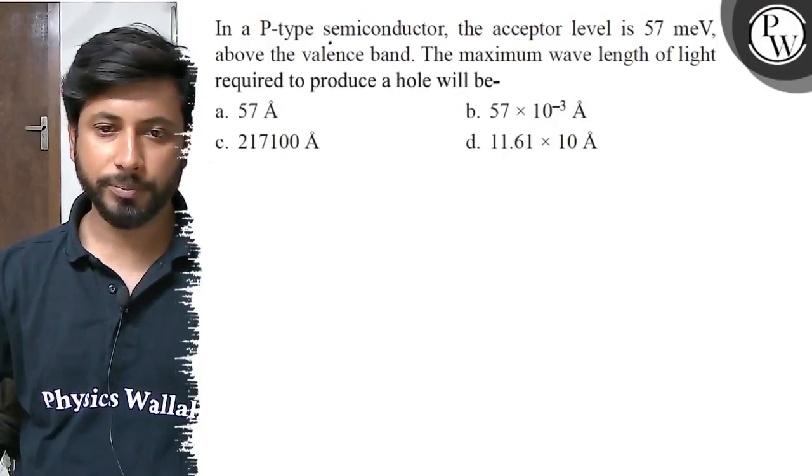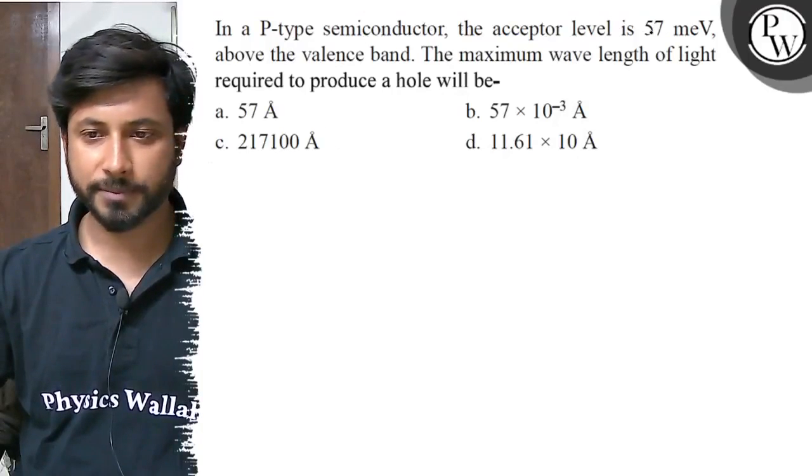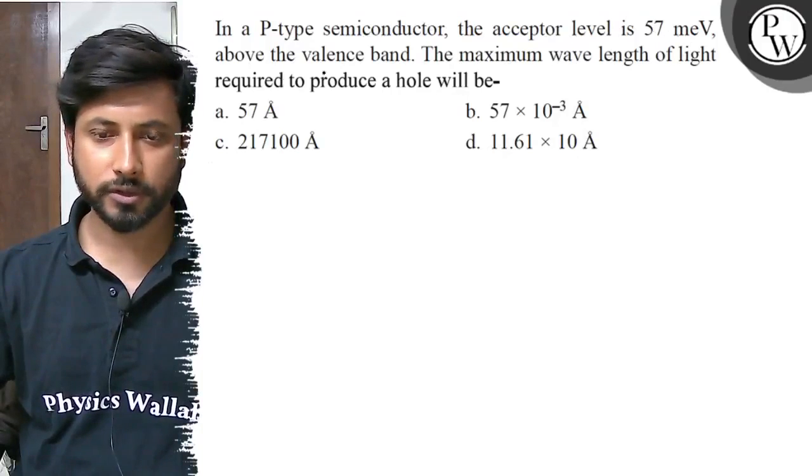Hello, let us see this question. In a P-type semiconductor, the acceptor level is 57 mega electron volt above the valence band.